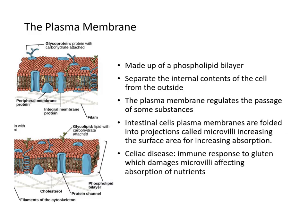Starting with the plasma membrane: it is made up of a phospholipid bilayer. It's called a bilayer because there are two layers — here's one on top and one at the bottom. These separate the internal contents of the cell from the outside environment. The plasma membrane also acts as a barrier, regulating the passage of many substances.